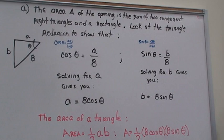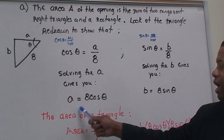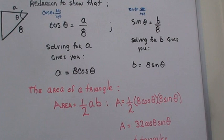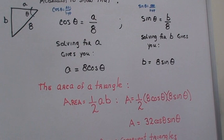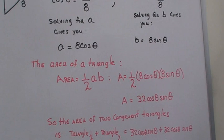And so, with doing this, cosine theta is the adjacent over the hypotenuse. So, cosine theta is equal to A divided by eight. So, solving for A gives you A is equal to eight times cosine theta. And we do the same thing for B, because we don't know what B is either. So, sine theta is equal to B over eight, which is the opposite over the hypotenuse. So, solving for B will give you B is equal to eight times sine theta.